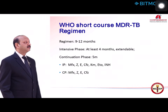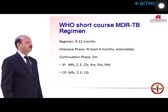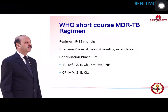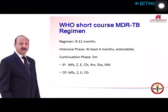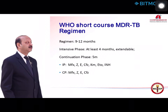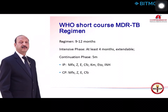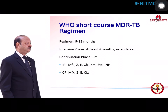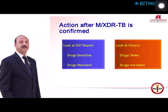This 9-to-12-month regimen has an intensive phase of 4 months (extendable to 6 months) and a continuation phase of 5 months. In the intensive phase we use moxifloxacin, pyrazinamide, ethambutol, clofazimine (also used in continuation phase), plus kanamycin, ethionamide, and high-dose INH additionally during the intensive phase. The injectable period has been reduced to a minimum of 4 months. Drugs with significant adverse effects like kanamycin, ethionamide, and high-dose INH are stopped after the intensive phase. Notably, both moxifloxacin and INH are used at high doses.